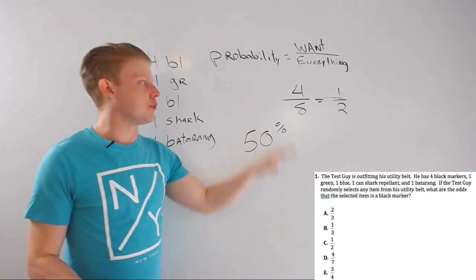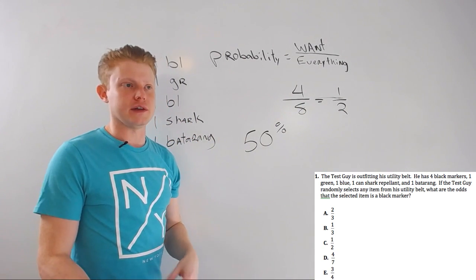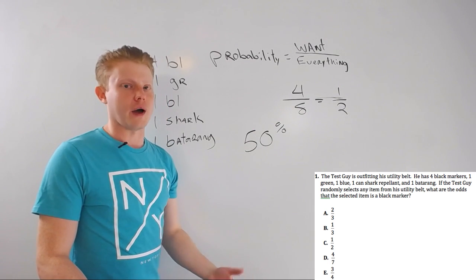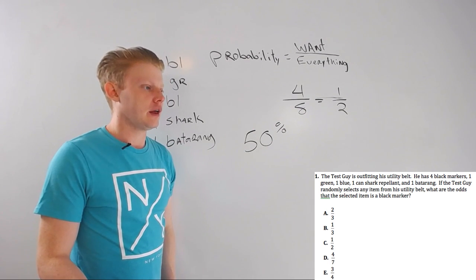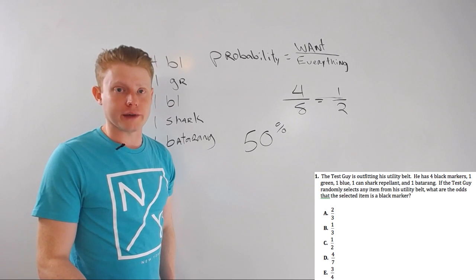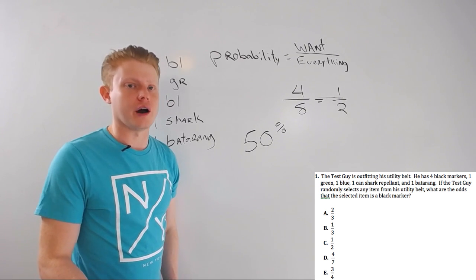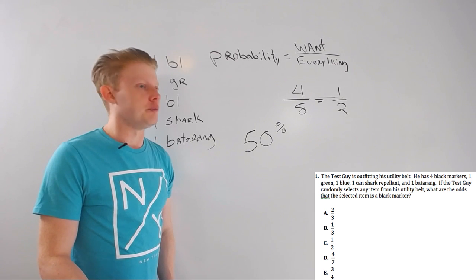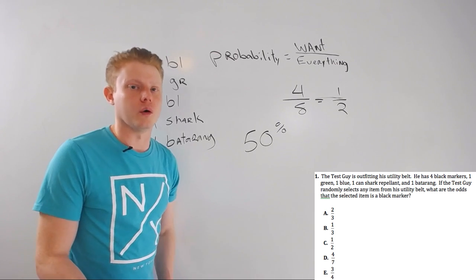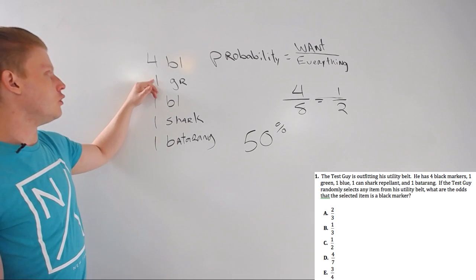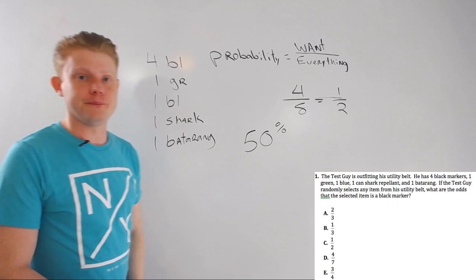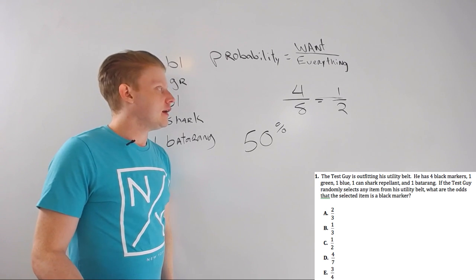This is the prototypical ACT probability problem they've used for years. Other ways they'll ask this: What is the probability that you won't pull a black marker out? Which would be one-half. Or: not the green marker—that would be seven over eight.